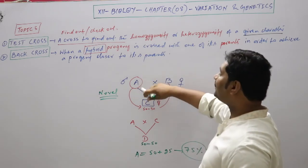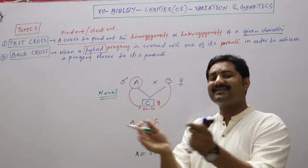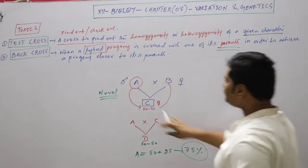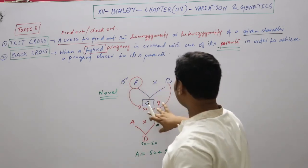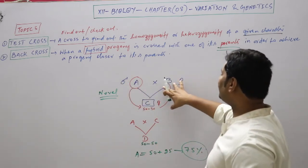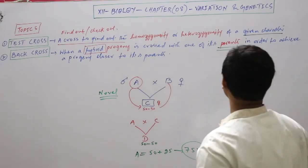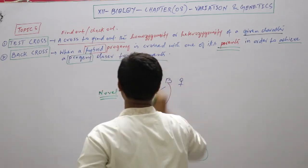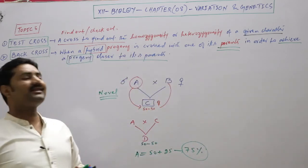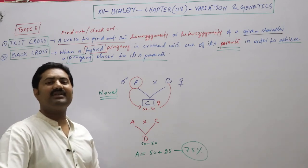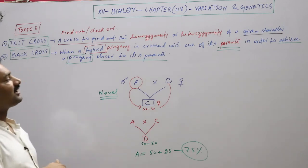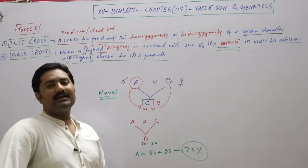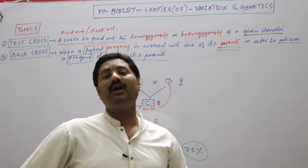The male parent is the target. The progeny progressively gains more of the target parent's characters with each backcross. The goal is to obtain a progeny with the maximum characters of the target parent. This process — crossing a hybrid with one of its parents to get a progeny with more of that parent's characters — is called back cross. In summary, the cross used to determine homozygosity or heterozygosity of a given character is called test cross.